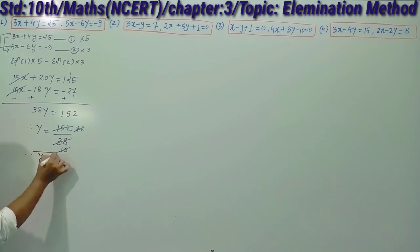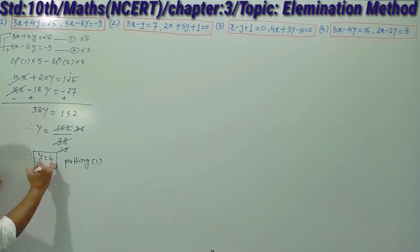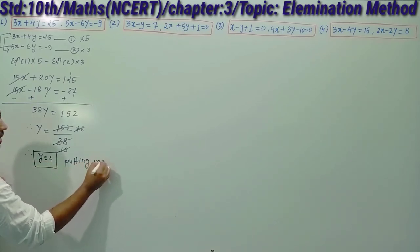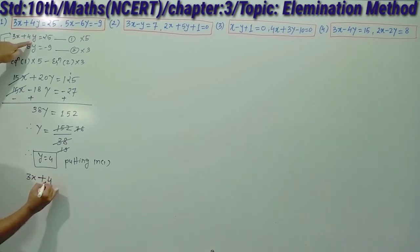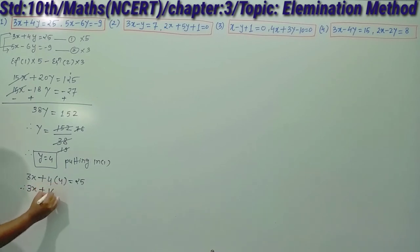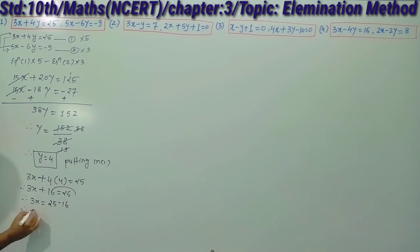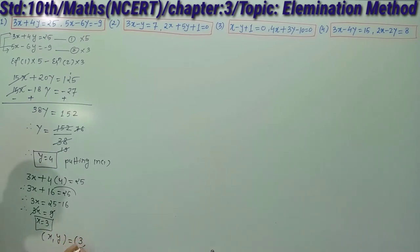Now putting y equals 4 in equation 1: 3x plus 4 times 4 equals 25, so 3x plus 16 equals 25, so 3x equals 25 minus 16 equals 9, so x equals 9 divided by 3 equals 3. We can write the ordered pair x comma y as: x equals 3 and y equals 4.